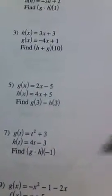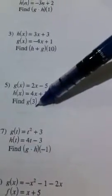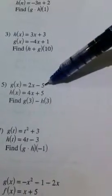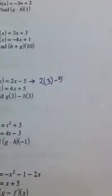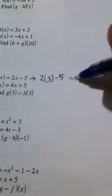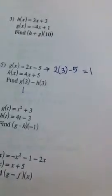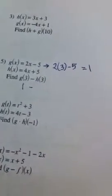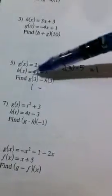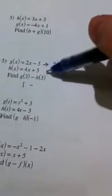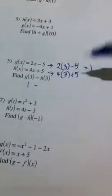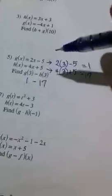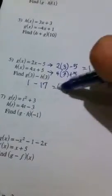I'm going to start with number 5. It says G of 3 minus H of 3. All that means is you're finding the value of G of 3, meaning go to the function G, which is 2X minus 5, and put a 3 in for X. So that's 2 times 3 minus 5. You can do that in your head. That's 6 minus 5, which is 1. So I'm going to put a 1 instead of the G of 3. I'm just replacing it. Minus H of 3 means go to your H function, 4X plus 5, and replace the X with a 3. So I have 4 times 3 plus 5. 4 times 3 is 12, 12 plus 5 is 17. And 1 minus 17 is negative 16.